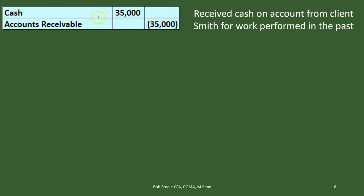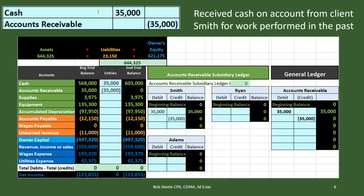Here's the transaction: we're going to debit cash, increasing cash, and credit receivable, decreasing receivable. Cash goes up — debit, another debit makes it go up in the debit direction. The receivable has a debit balance; we credited it, which is the opposite, which made it go down to zero. Notice there's no effect on net income from this transaction because neither of those accounts are income statement accounts. When did we record the revenue? Last time, when we did the work — when we earned it. That's when we recorded it.